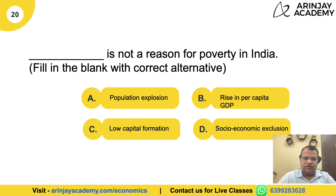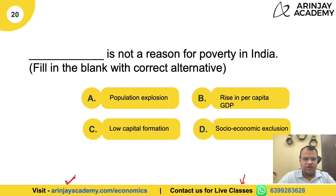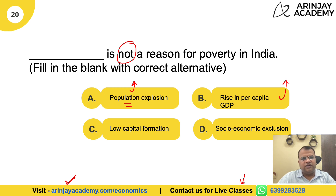Question 20, the last question: Blank is NOT a reason for poverty in India. Population explosion is definitely a reason for poverty — with an increase in population, earnings go down and income is low. Rise in per capita GDP is not a reason for poverty; on the contrary, when per capita GDP rises, poverty decreases. Low capital formation is also a reason for poverty. Socio-economic exclusion is also a reason for poverty. Therefore, rise in per capita GDP is the correct answer — it is not a reason for poverty.